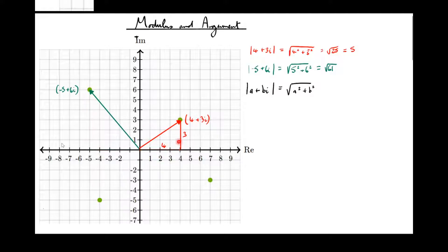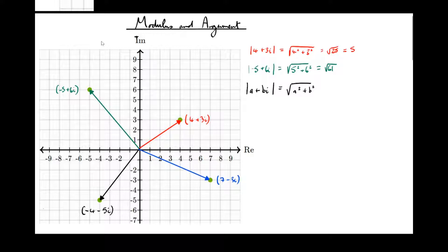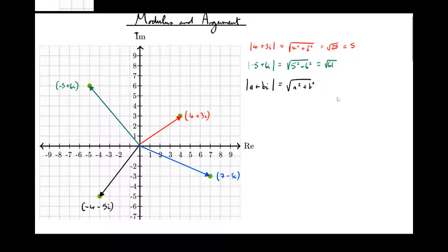Now we're going to have a look at the argument of a complex number. We also have two more complex numbers: 7 minus 3i and minus 4 minus 5i. The argument of a complex number is the anti-clockwise angle that it makes with the positive real axis. Let's look at 4 plus 3i — the anti-clockwise angle made with the positive real axis.